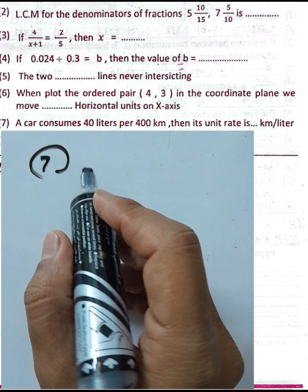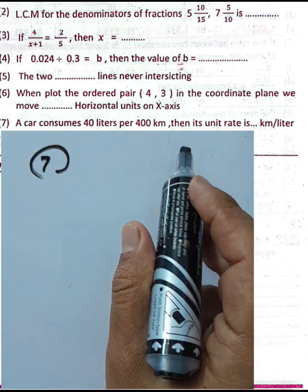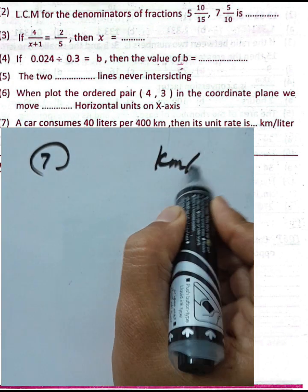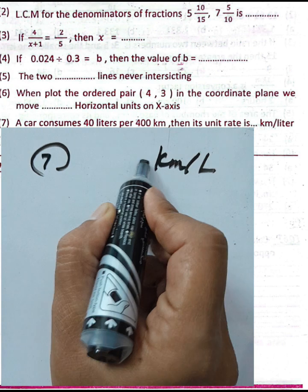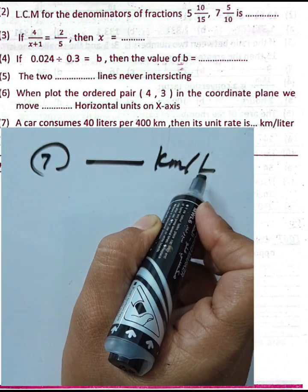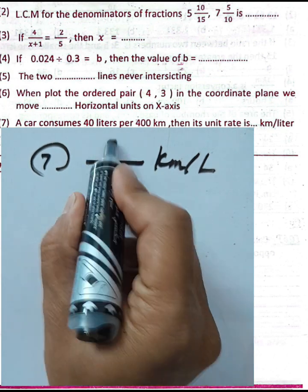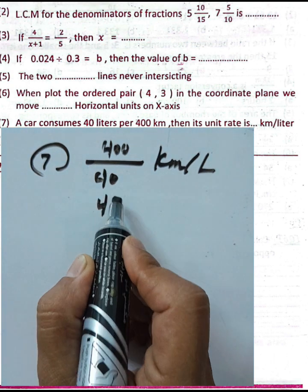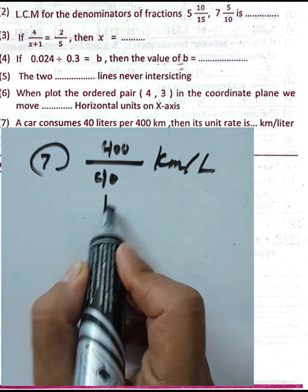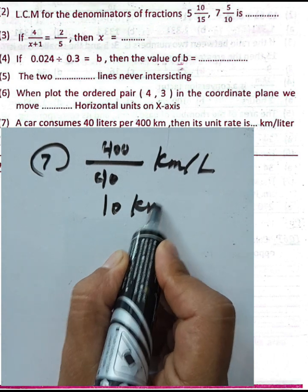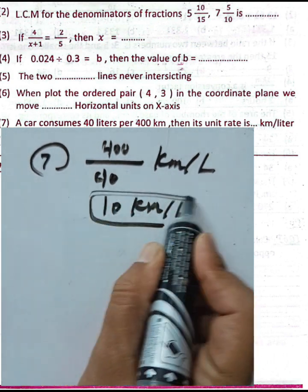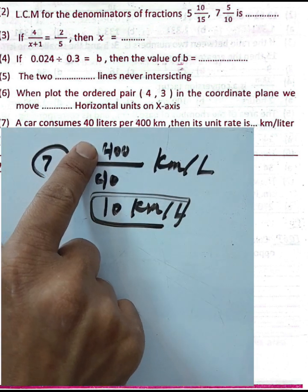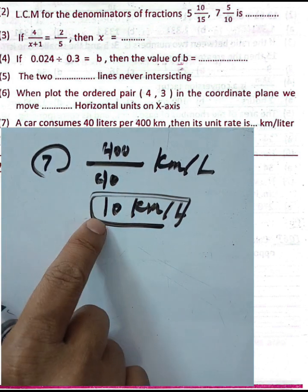Question number seven: a car consumes 40 liters per 400 kilometers. To find the unit rate in kilometers per liter, divide 400 by 40, which equals 10. The unit rate is 10 kilometers per liter. Write 10 in the space.